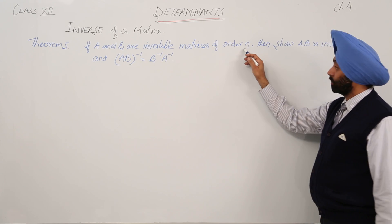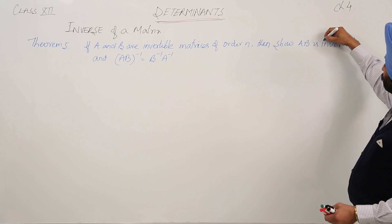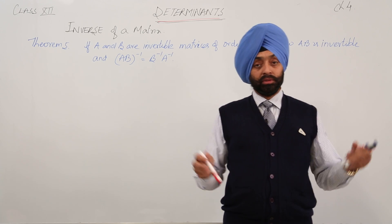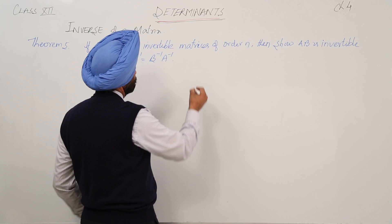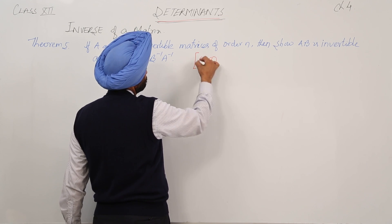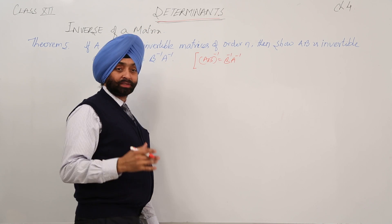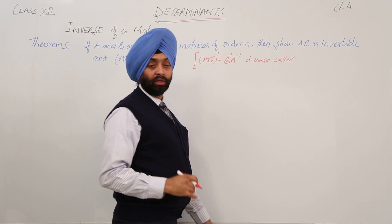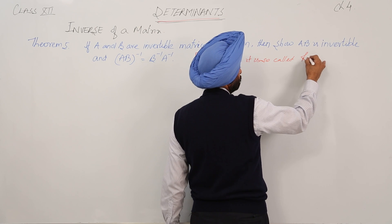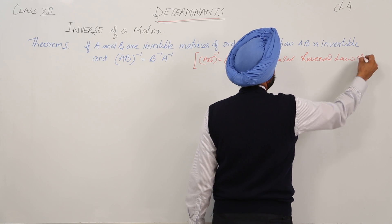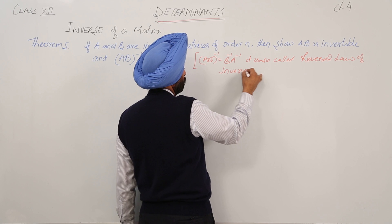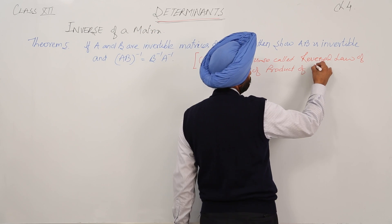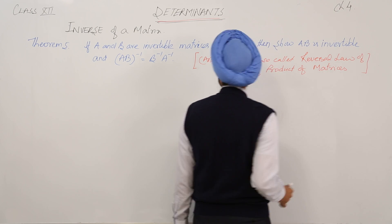If A and B are invertible matrices of order N, then show that AB is invertible and when AB is invertible, then AB inverse is equal to B inverse A inverse. This is a very important result, also called the reversal law of inverse of product of matrices.